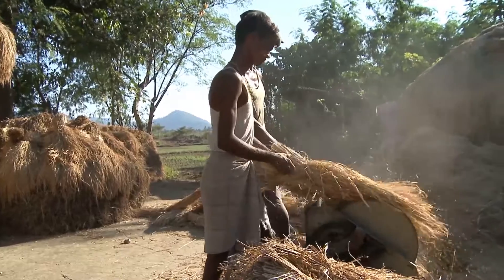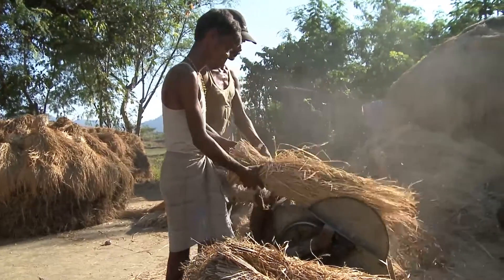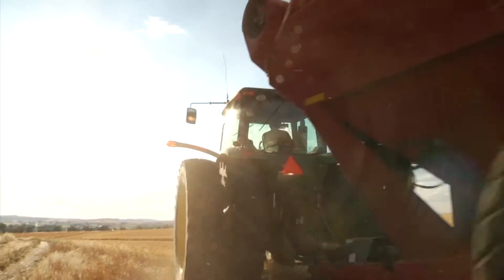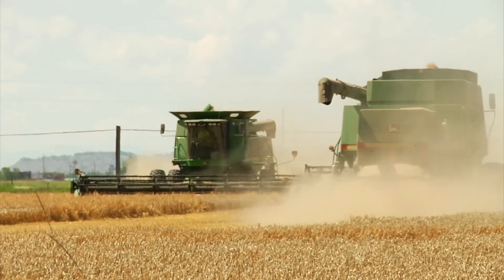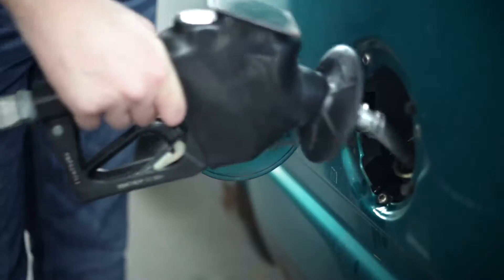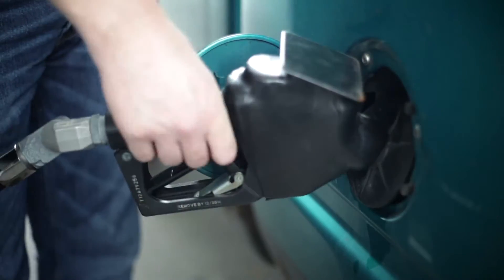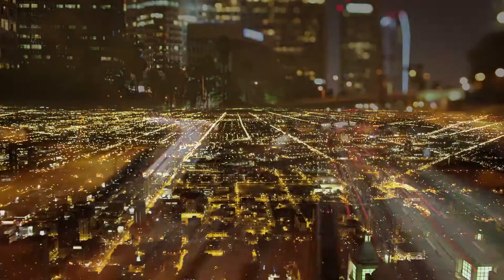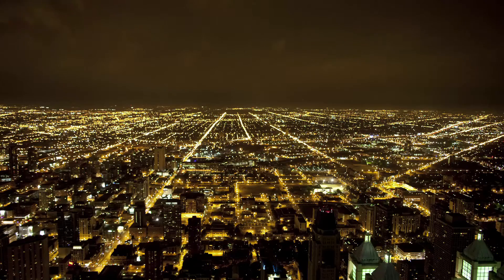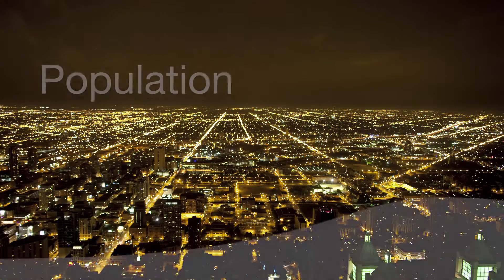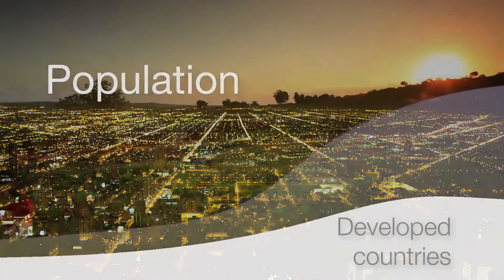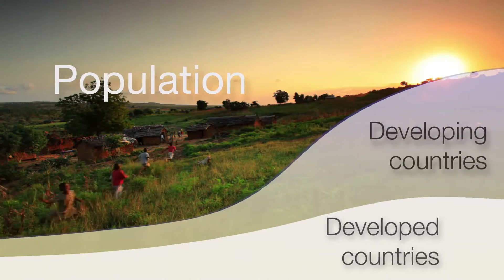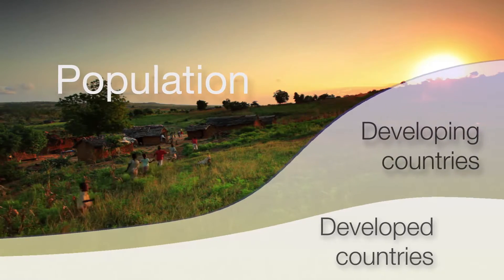But people in different countries impact the environment in different ways. People in the developed world tend to use more fossil fuel energy and other resources that potentially cause greater harm to the natural environment. While the human population in the developed world has stopped growing, the population in the developing world continues to grow.